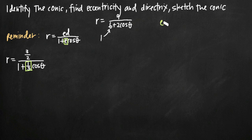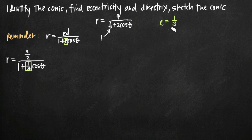Given that eccentricity equals 1/3, we can identify the conic. It's always true that if eccentricity is less than 1, we're dealing with an ellipse; if eccentricity equals 1, a parabola; and if eccentricity is greater than 1, a hyperbola. Since e equals 1/3, we know we're dealing with an ellipse. So we've identified the conic as an ellipse with eccentricity 1/3.